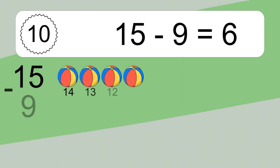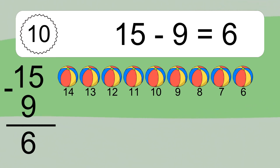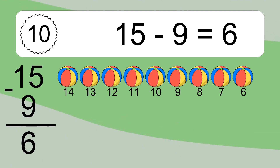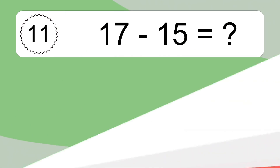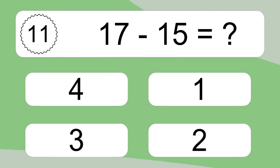15 minus 9 equals 6. Let's count it: 14, 13, 12, 11, 10, 9, 8, 7, 6. 17 minus 15 equals what?